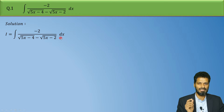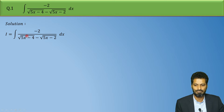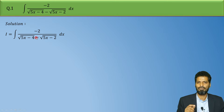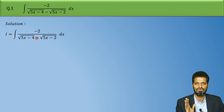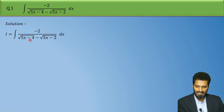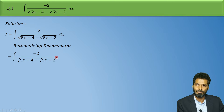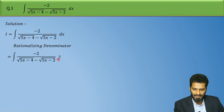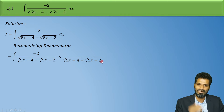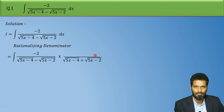Now, our first observation to solve this is that in the denominator, we are given the difference of two roots. So whenever you have a difference or sum of two roots in the denominator, we usually rationalize it. So here also, we will take this function as it is and multiply it by its conjugate. Since there is a minus sign in the middle, we multiply by the plus sign. So the conjugate of the denominator becomes: root of (5x minus 4) plus root of (5x minus 2). And to balance this, we multiply the numerator by the same term as well.